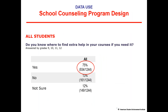Let's look at how you might use these group data reports. Take one question: Do you know where to find extra help for courses if you need it? In this real school's data, 75% said yes, 13% said no, and 12% weren't sure — meaning a quarter of students didn't know where to find extra help. As a counselor, you might wonder whether this is across the board or specific to certain student groups, so you can start looking at drill-down reports. Looking at grade level data, there is some increase from 9th to 12th grade, but not a big one — it's fairly consistent across all grades.